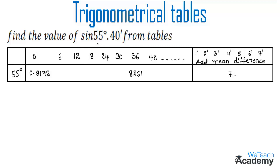we refer to the table of natural sines and first look for the intersection of the row containing 55 degrees with the column that corresponds to the given minutes. Here we have the row of 55 degrees and the minutes column, but the given minutes is 40 minutes and we only have a value for 36 minutes, so we do not find the exact intersection.